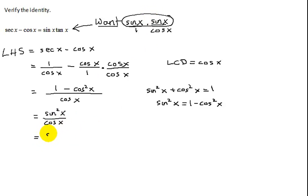So sine squared x is sine x over 1 times sine x. That's going to give me my sine squared x in the numerator over cosine x. So now this is equal to this. And I can then write this as sine x times sine x over cosine x is tangent x.